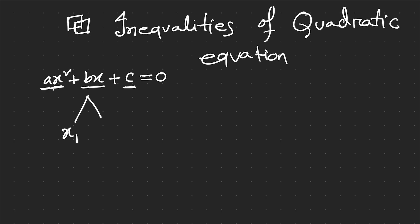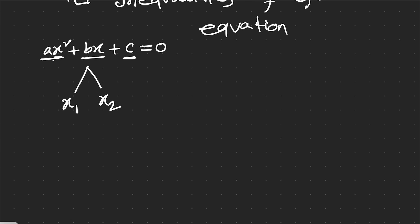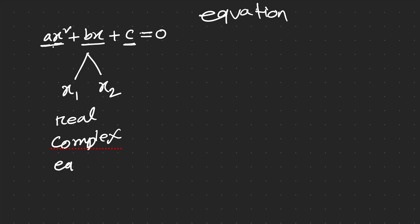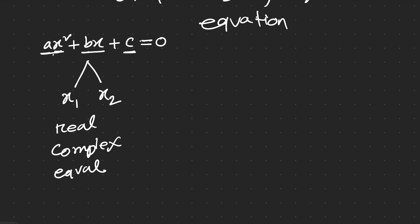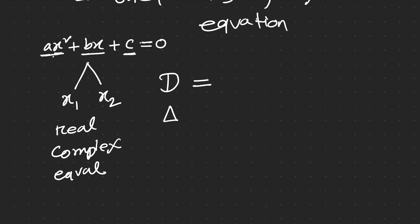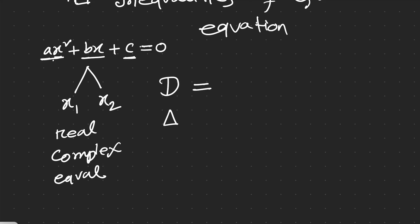Therefore, we know the roots of this equation must be 2. The nature of the roots — whether real, complex, or equal — all depends on the discriminant, which is called D or delta. In this tutorial we are going to use D.